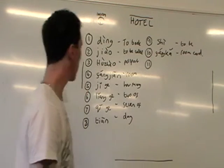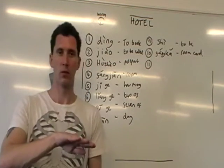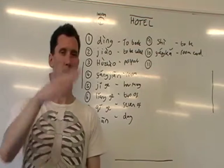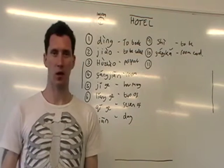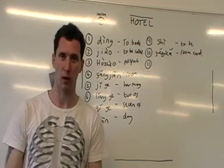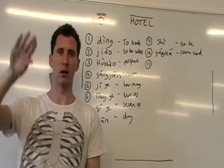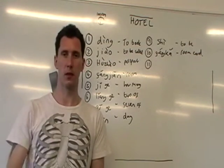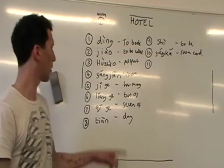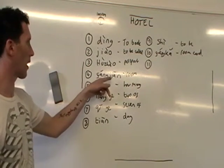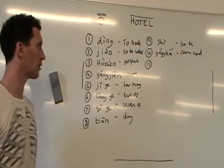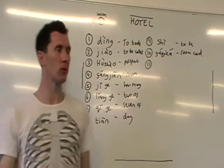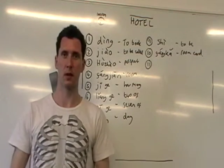Next word: 'room card.' The word is fáng — fáng, fáng — and then on the end, kǎ. This is a borrowed word from English, from the word 'card.' So fángkǎ, fángkǎ — room card. If you remember, fáng means house or room, so it's like 'house card' or room card. You can see the word fáng is used again there: fángkǎ.